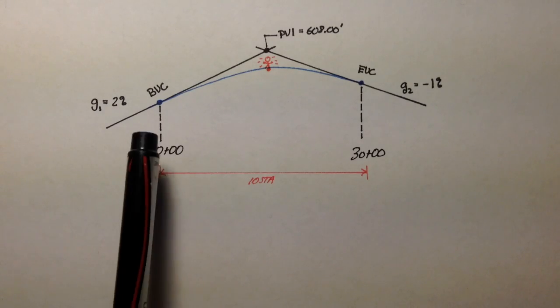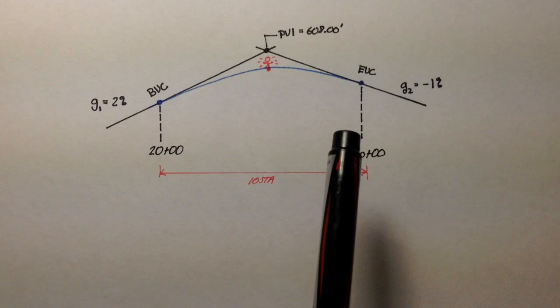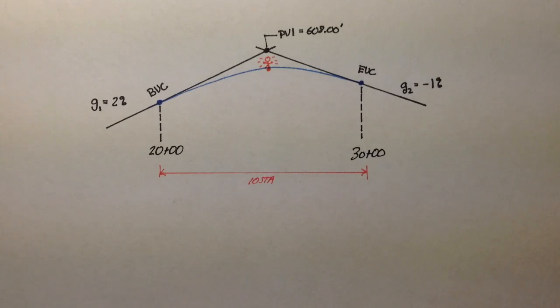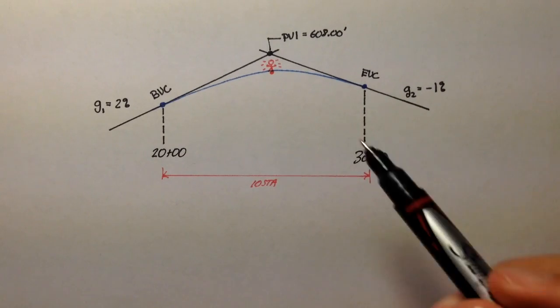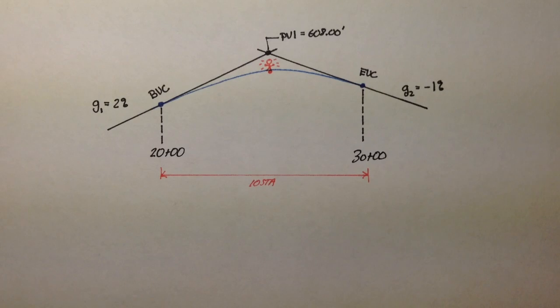First of all, we want to find out what the elevations of BVC and EVC are. So BVC is the beginning of vertical curve, and EVC is the end of vertical curve. We also want to find out the elevation of this point located right at the PVI.